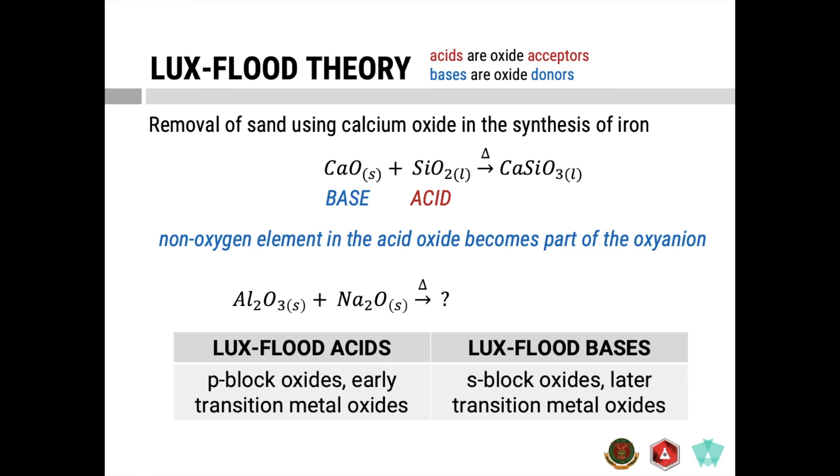So the Lux-Flood acid in this reaction is obviously your aluminum oxide. And if that is the case, it will accept the oxide coming from sodium oxide to become an oxyanion. So as you can see, this is now your product from the reaction of sodium oxide and aluminum oxide. The oxide or the oxygen part in sodium oxide is now gone, and it's now donated to your aluminum oxide.